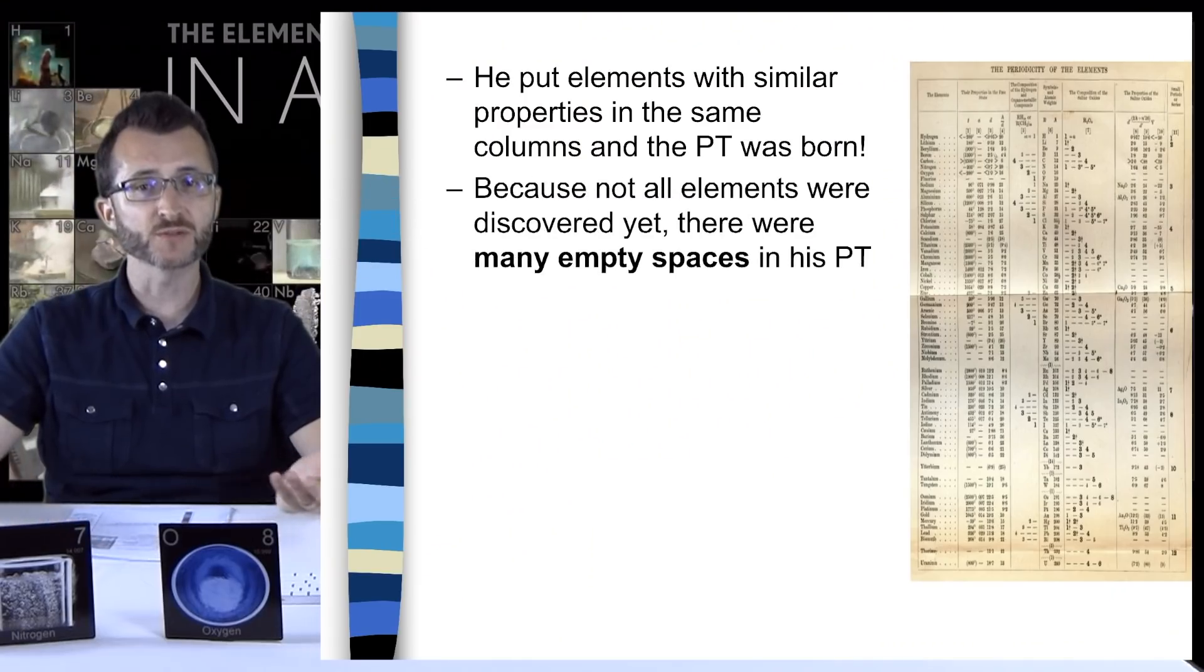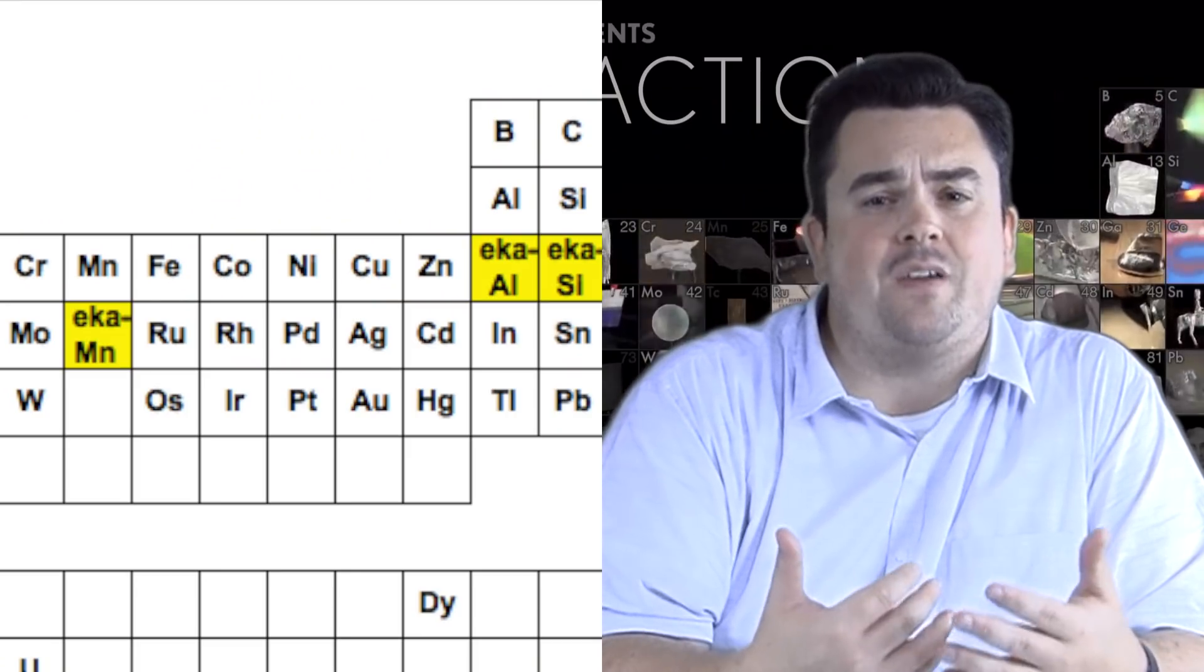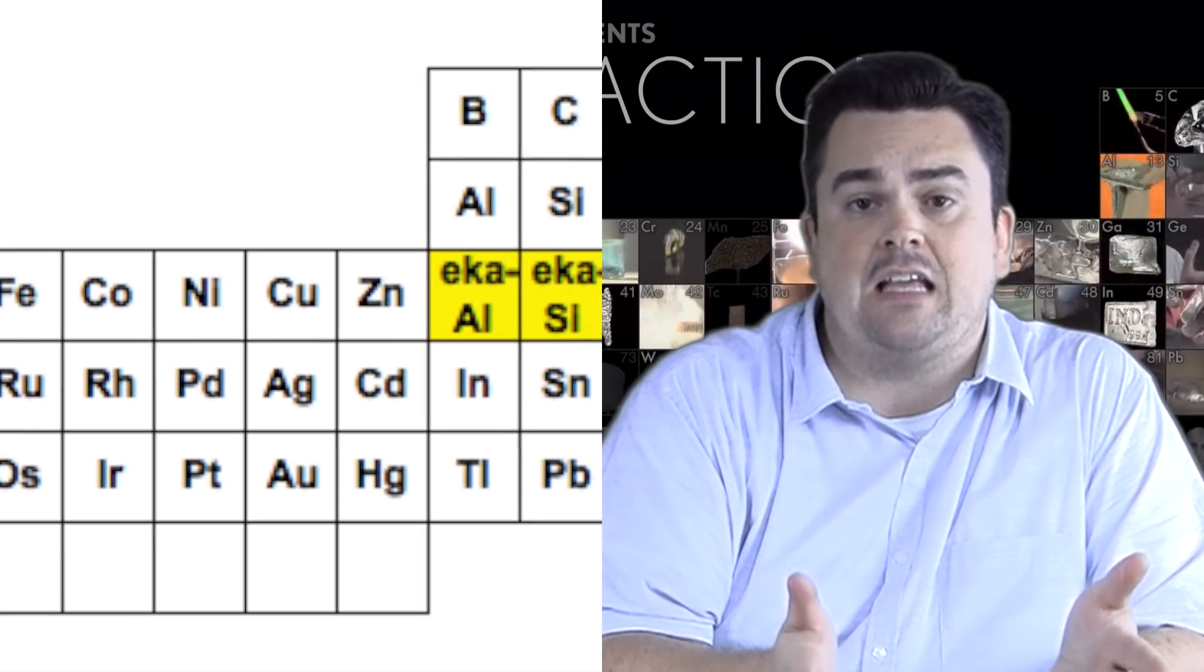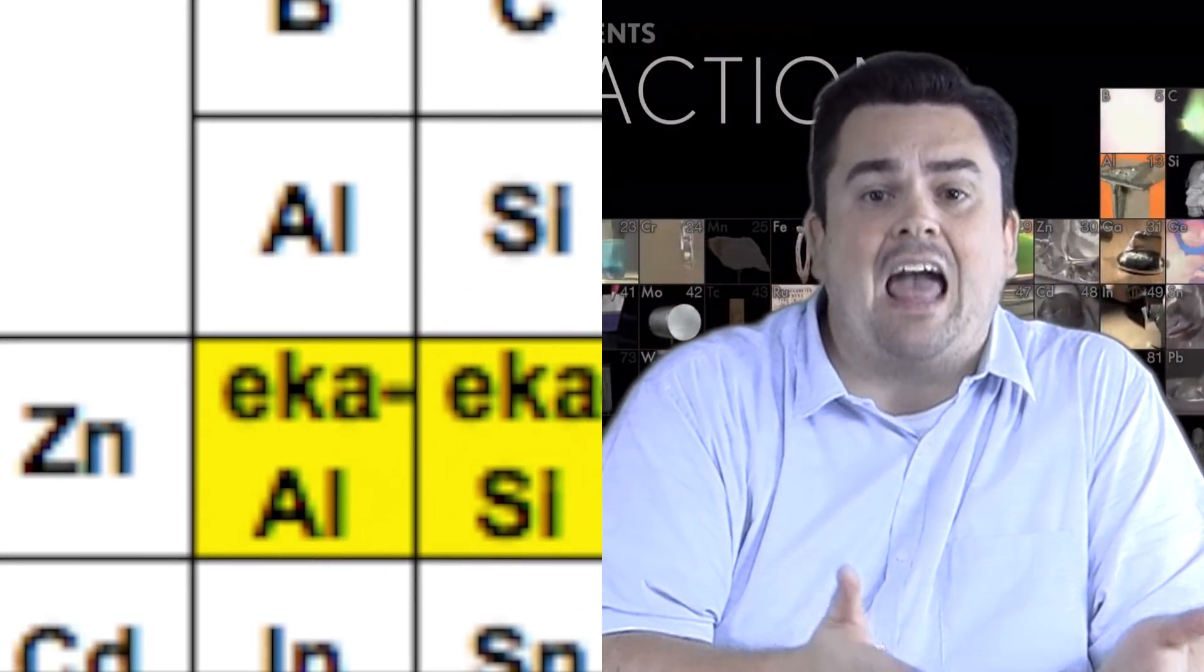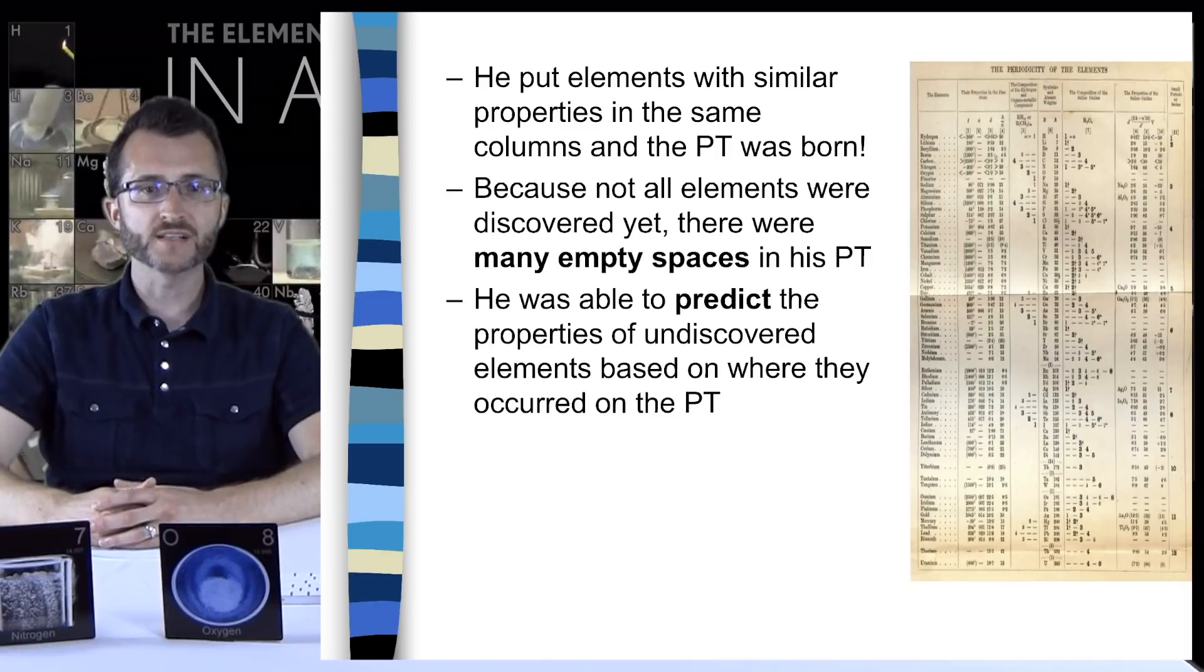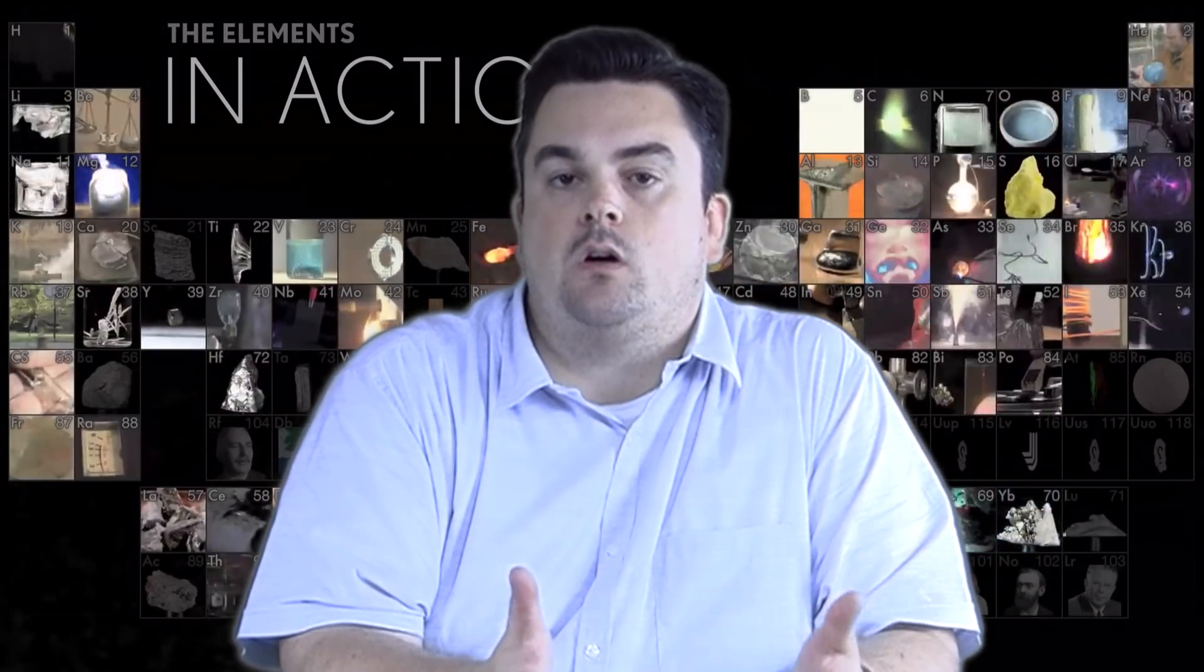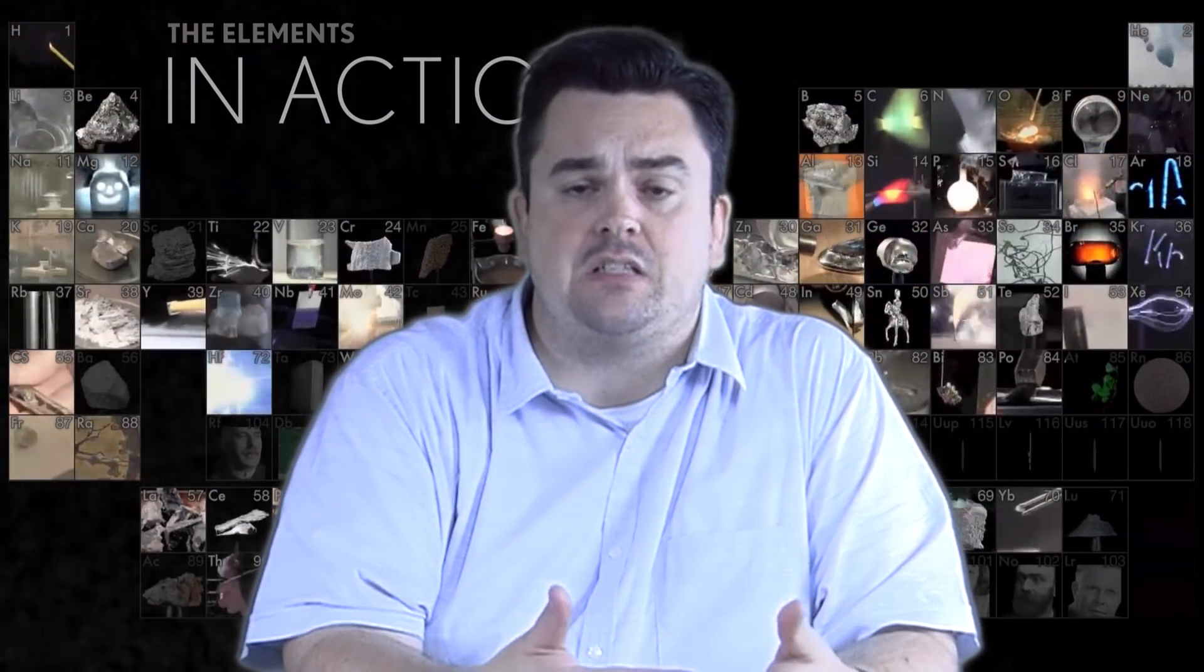Because not all elements were discovered yet, there were many empty spaces in his periodic table. So for those blanks that Mendeleev left, those elements that weren't yet discovered, he used the prefix echa and the element that came above that blank spot. For instance, gallium was not yet discovered at the time. Gallium falls right below aluminum on the periodic table. So Mendeleev called it echa-aluminum, and echa is spelled E-K-A. He was able to predict the properties of undiscovered elements based on where they occurred on the periodic table.